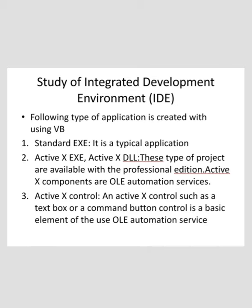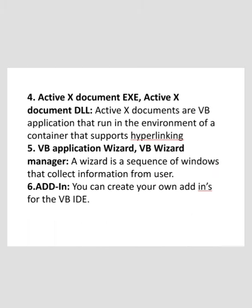The fourth is ActiveX Document EXE and ActiveX Document DLL. ActiveX documents are VB applications that run in the environment of a container that supports hyperlinking, such as Internet Explorer. The fifth type is the VB Application Wizard and VB Wizard Manager. The Application Wizard takes you through the steps of setting up the skeleton of a new application, while the Wizard Manager lets you build your own wizard.